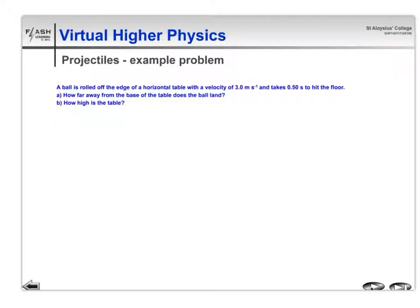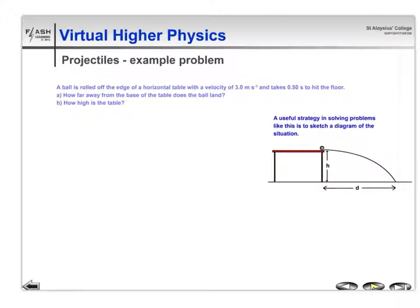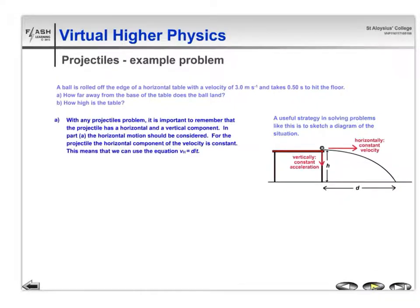Let's look at a worked example involving projectiles. A ball is rolled off the edge of a horizontal table with a velocity of 3 meters per second and takes 0.5 seconds to hit the floor. It's often useful to sketch the situation. How far away from the base of the table does the ball land and how high is the table?